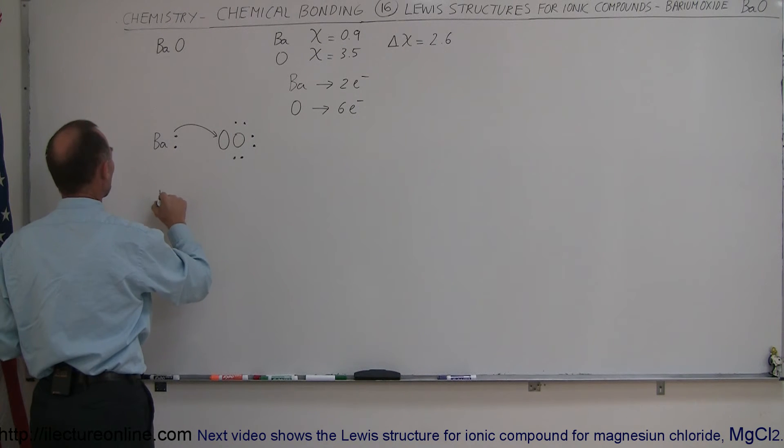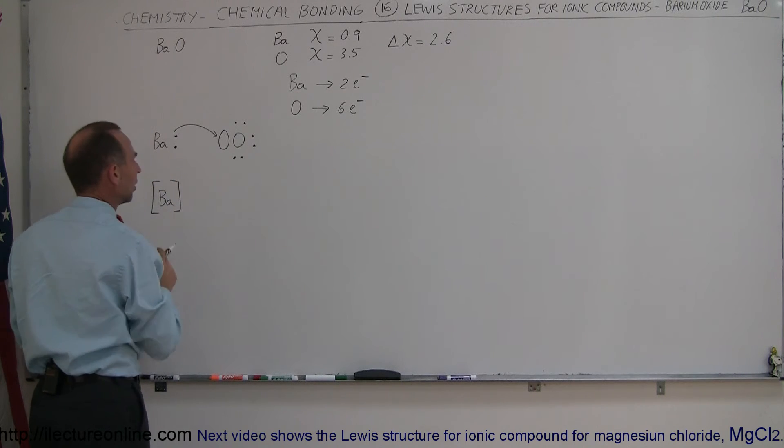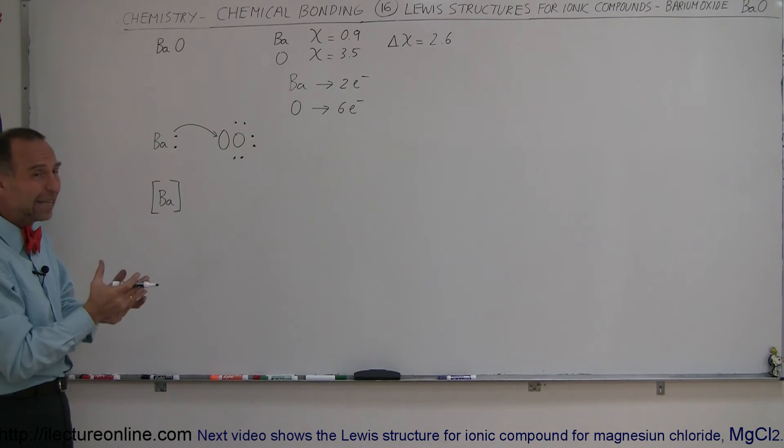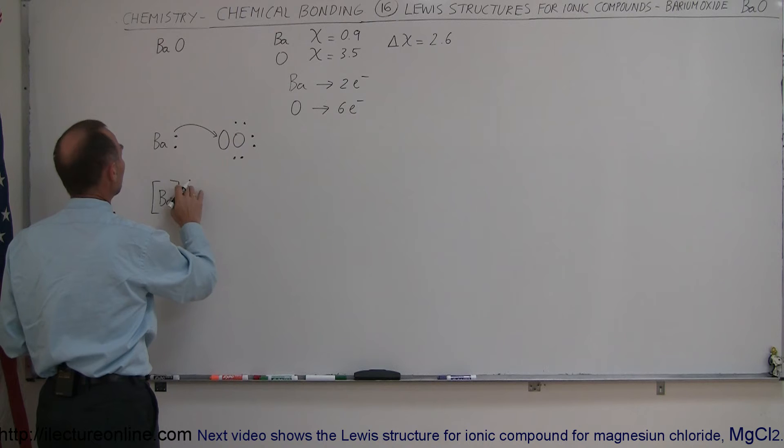So what we end up with is a barium atom which has no valence electrons in the outer shell, but has a full valence set in the shell right underneath that. This now becomes 2+ charge for that ion.